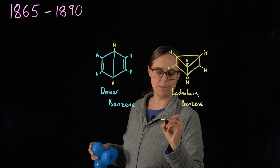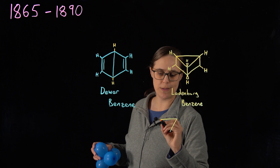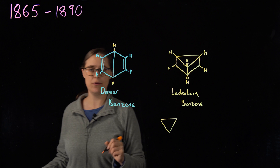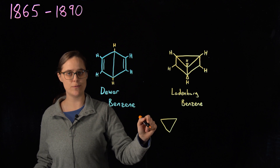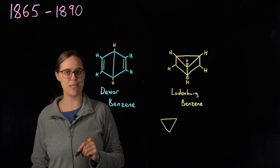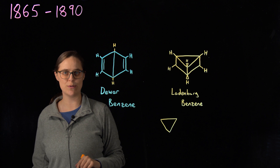This structure looks unstable. In my video about VSEPR theory, I was tying balloons together to show molecular geometries. A carbon bonded to four things prefers a bond angle of 109.5 degrees, but three carbons in a ring are forced into an equilateral triangle with 60-degree angles. In fact, cyclopropane — a molecule with three carbons in a ring — is an explosive, which shows just how unstable this arrangement is.